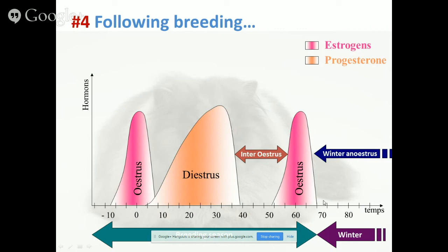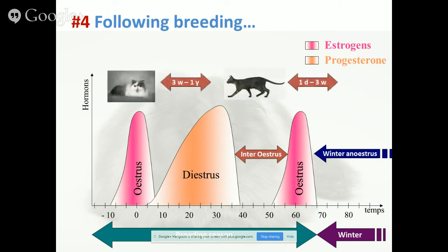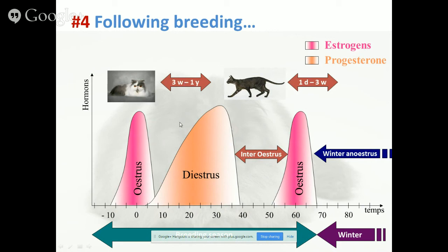After progesterone ceases, 2 to 3 weeks later a new oestrus period will follow. So based on the inter-oestrus interval — the interval between oestrus periods — you can evaluate if the queen ovulated or not. This is something important to check, because your veterinarian may ask: how long did it take for the queen to come back into season after breeding? If it's a normal inter-oestrus interval plus roughly 45 days, she may have ovulated but didn't conceive. If it's just a normal inter-oestrus interval, she might not have ovulated at all. Remember, this interval varies a lot by breed — Persians versus Siamese and Orientals, for example.